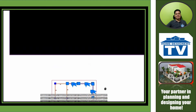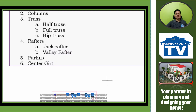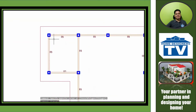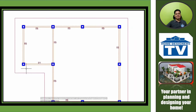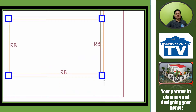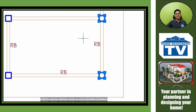Next, columns. The columns are these blue squares located at most corners of the house — these blue squares represent the columns.